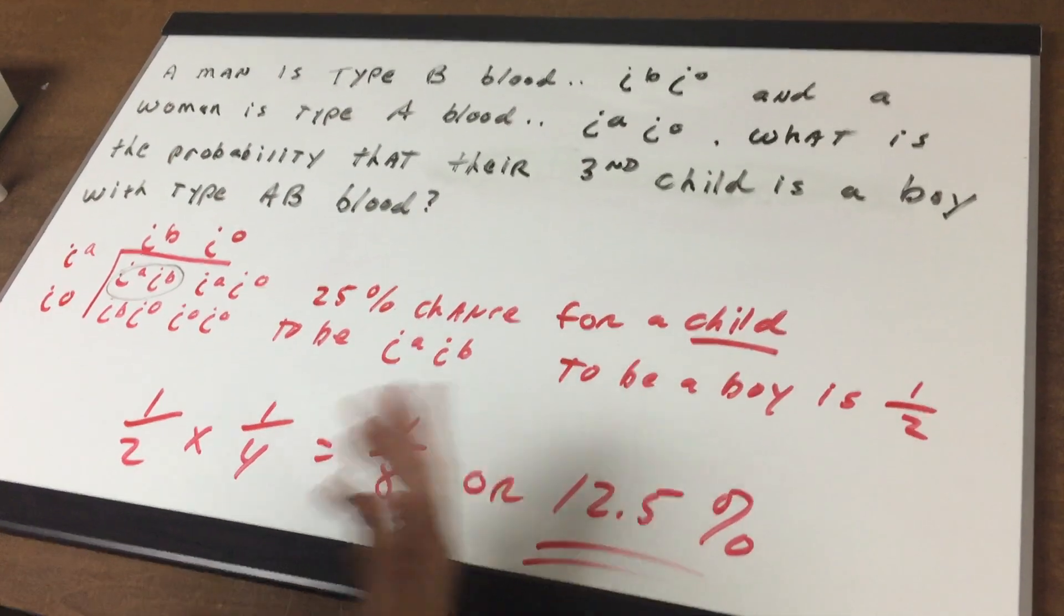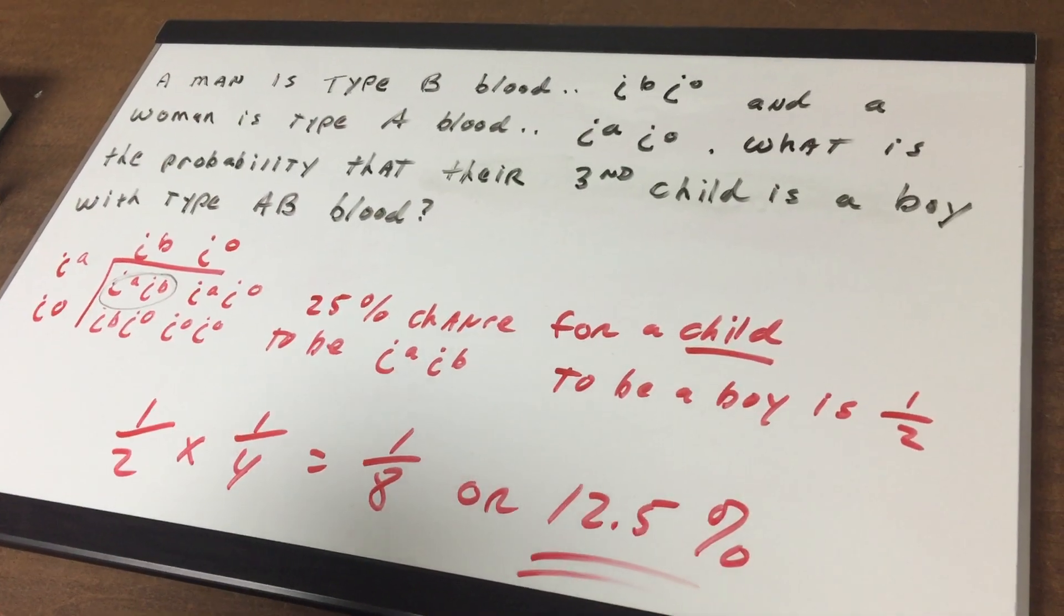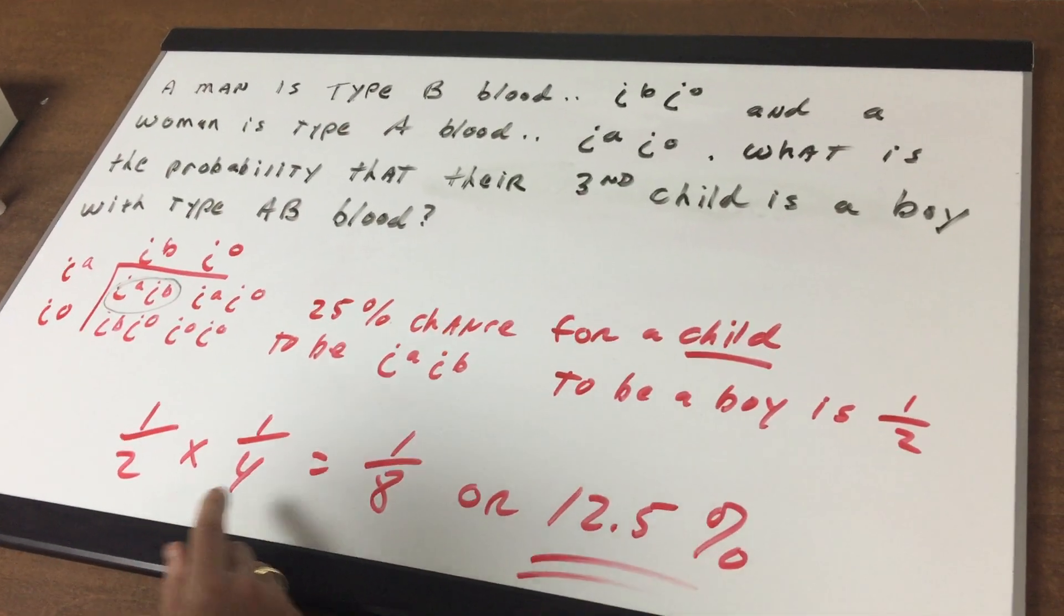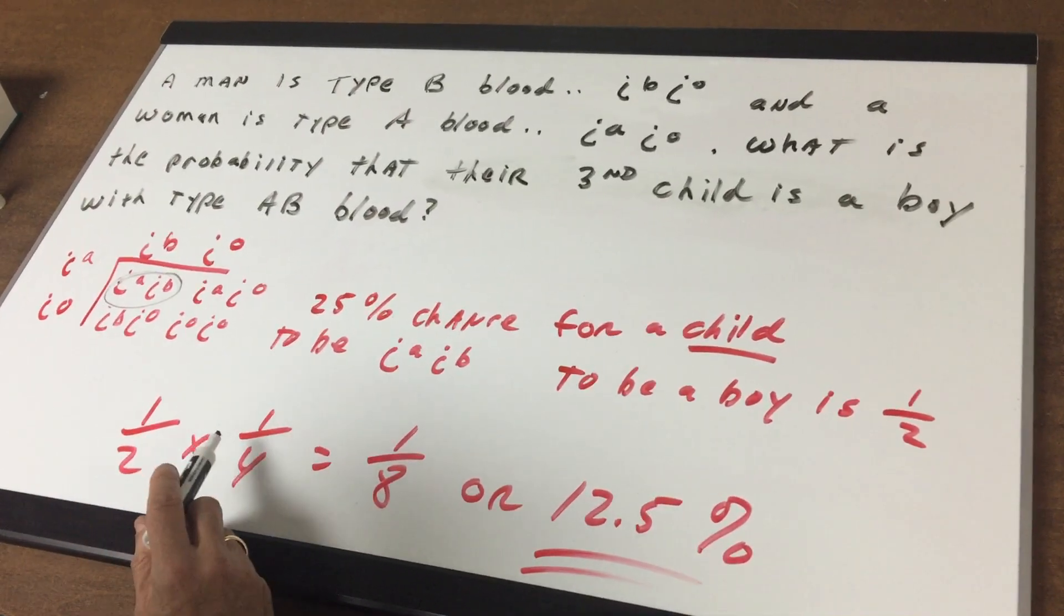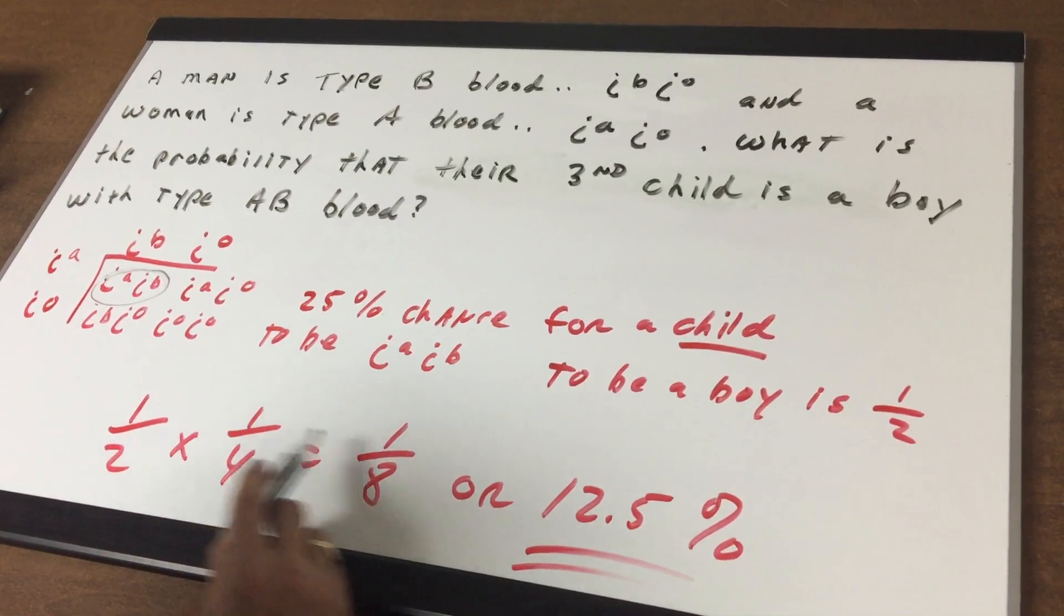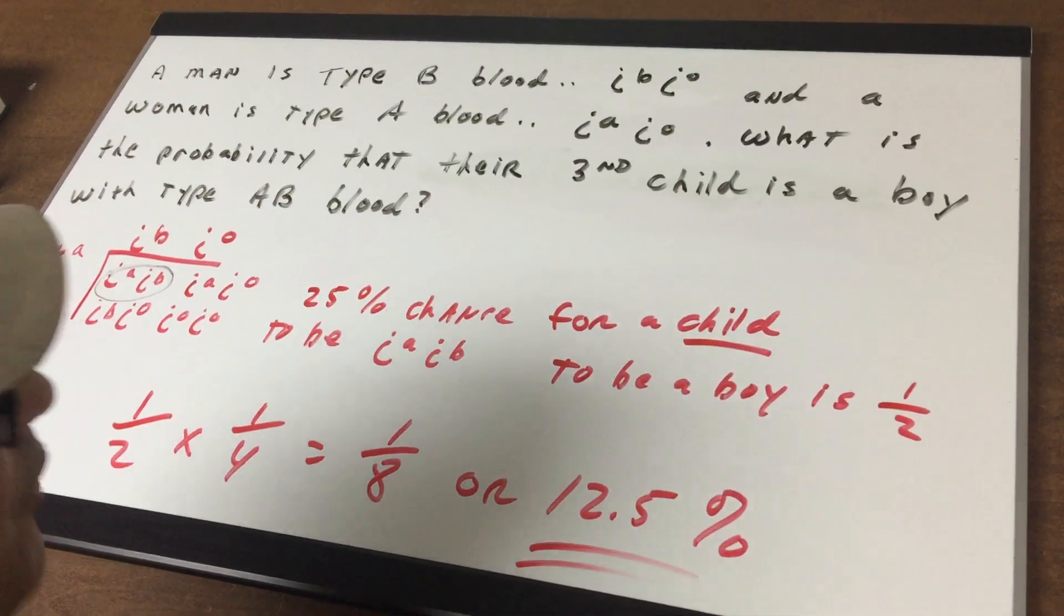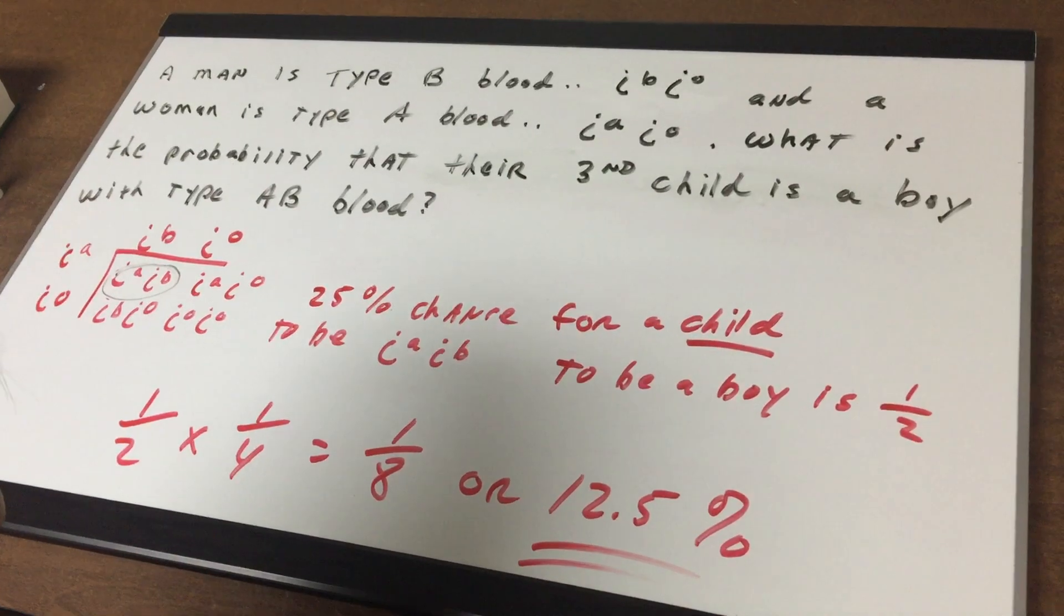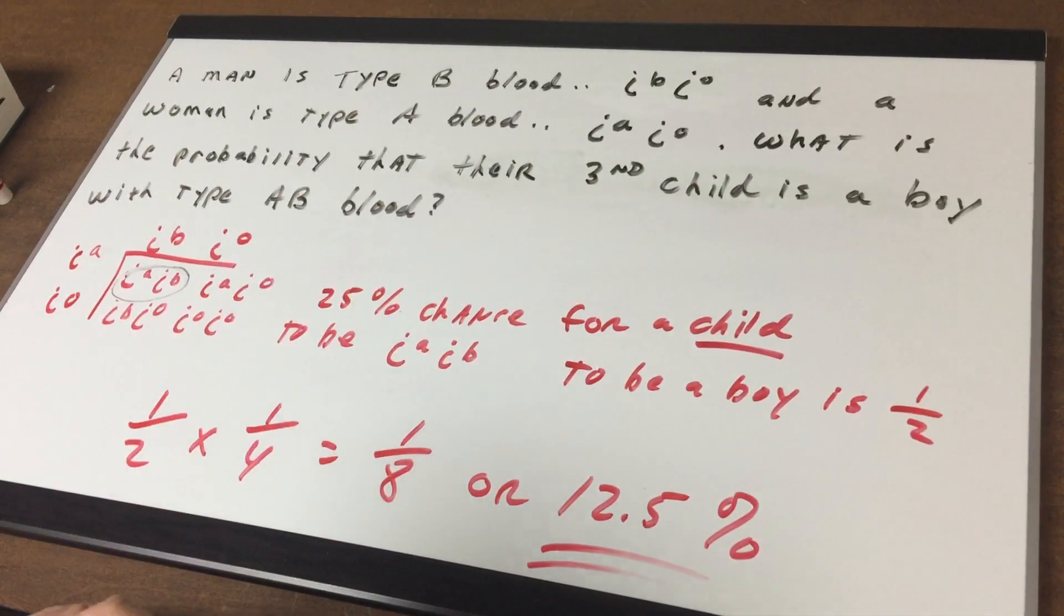Now to be a boy, the chances are a half. So what you're going to do is you're going to multiply the two probabilities. The chance to be a boy is a half. The chance to be AB is a quarter. Multiply them together, you get one over eight or 12.5% chance to be a boy and to have the AB blood type.